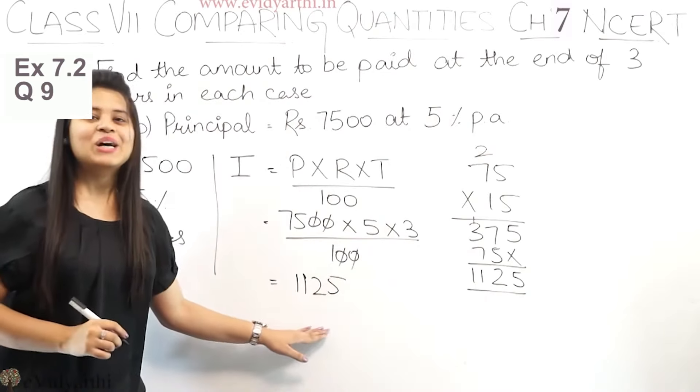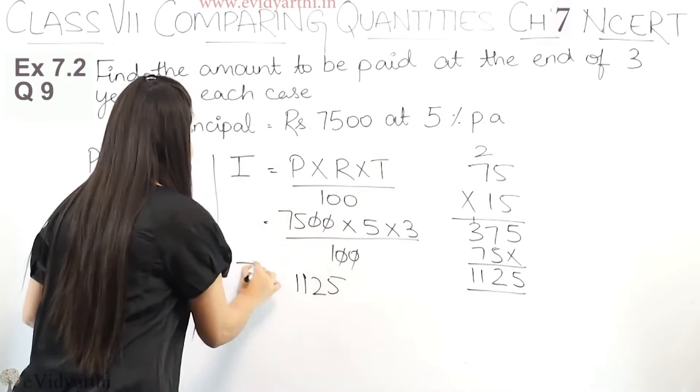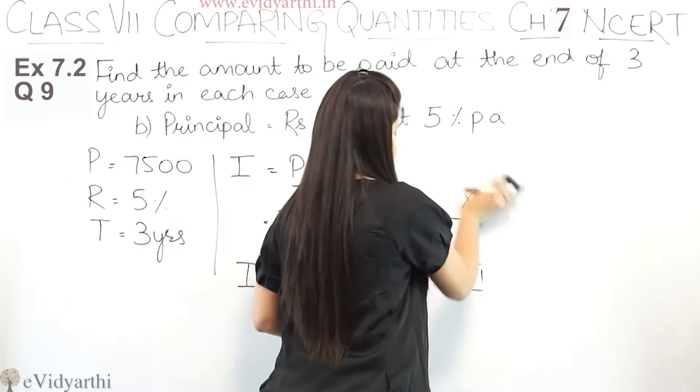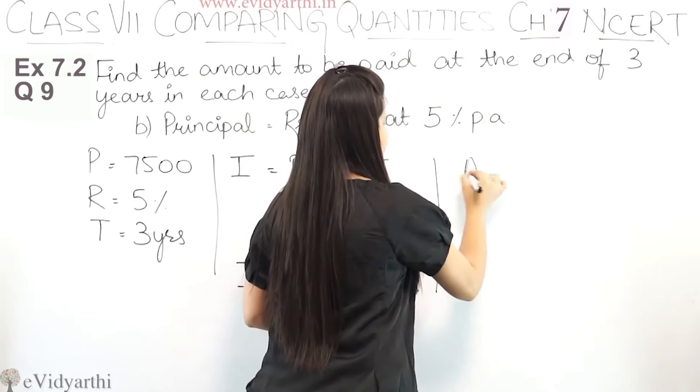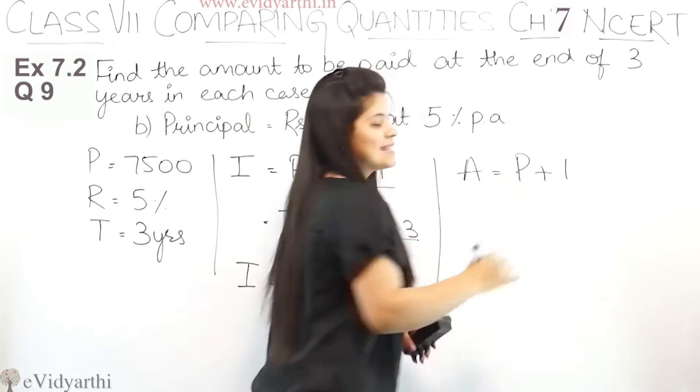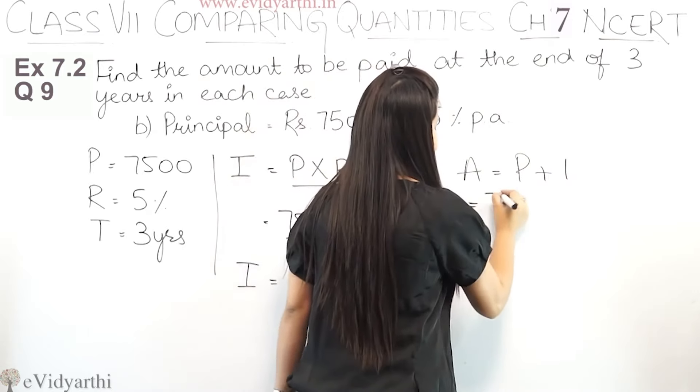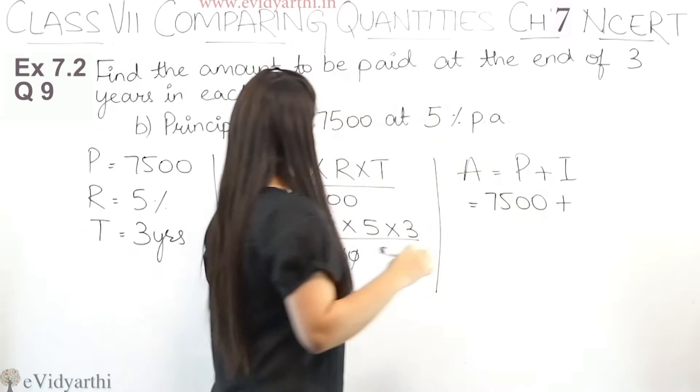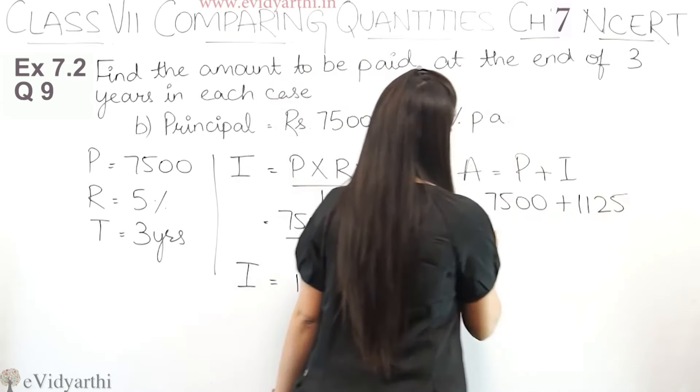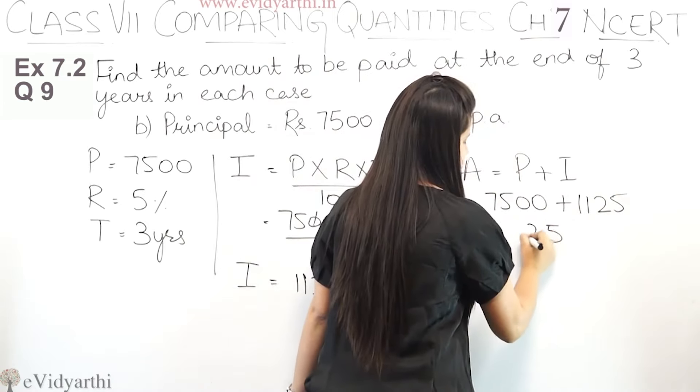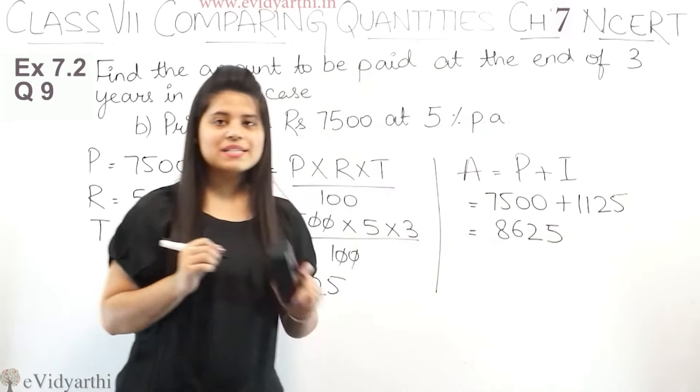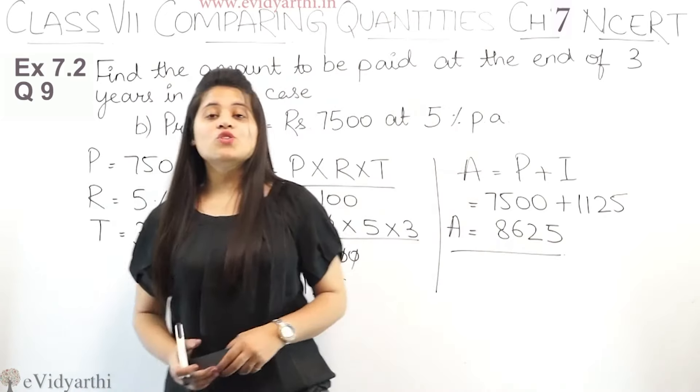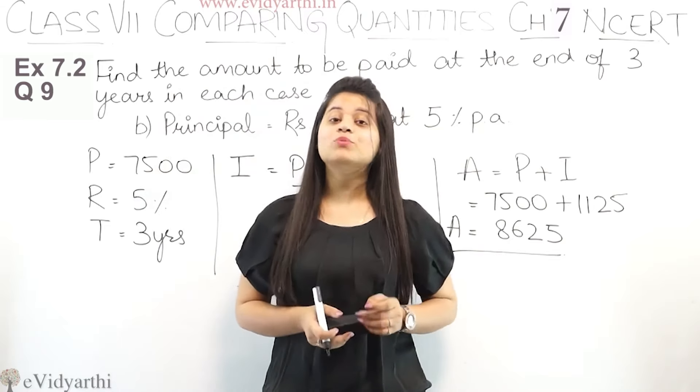Now this is our interest. We have to find the amount. So amount will be principal plus interest. Now principal is 7500 plus interest is 1125. Now let's add this. This would be 5, 2, 6, 8, which means 8625. So this is the amount.